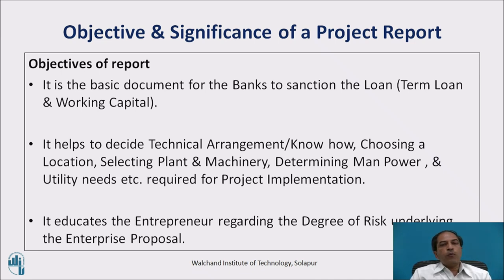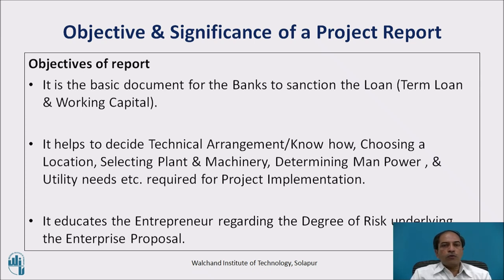It is the basic document for banks to sanction the loan — term loan and working capital. There are two types of loans: one is the term loan, which is used for asset creation such as land, building, machinery, equipment and accessories; and working capital, which is needed for day-to-day management — purchasing raw material, processing and finally selling to customers. The entire capital blocked in the conversion from raw material to final sale is called working capital. This is the first and foremost document which banks ask for.